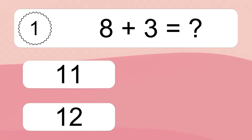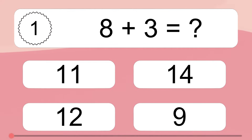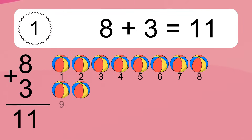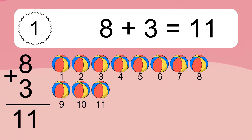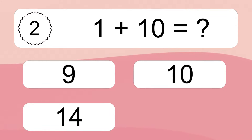8 plus 3 equals what? 8 plus 3 equals 11. Let's count it: 1, 2, 3, 4, 5, 6, 7, 8, 9, 10, 11.